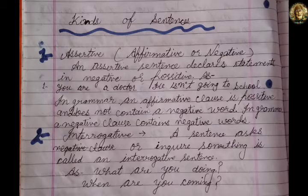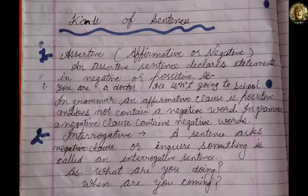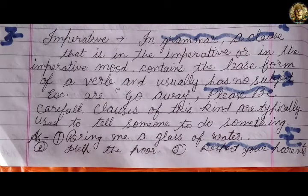Now we come to interrogative. A sentence that asks or inquires about something is called an interrogative sentence. For example, 'What are you doing?' and 'When are you coming?' These sentences are asking or inquiring about something.